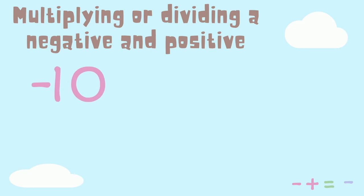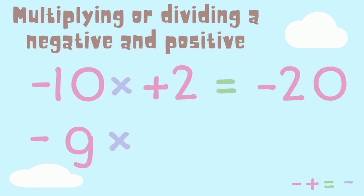If you are multiplying a negative and positive number together the result will be negative. You won't always see the positive sign. It is usually just implied that if there is no sign in front of the number it is positive.